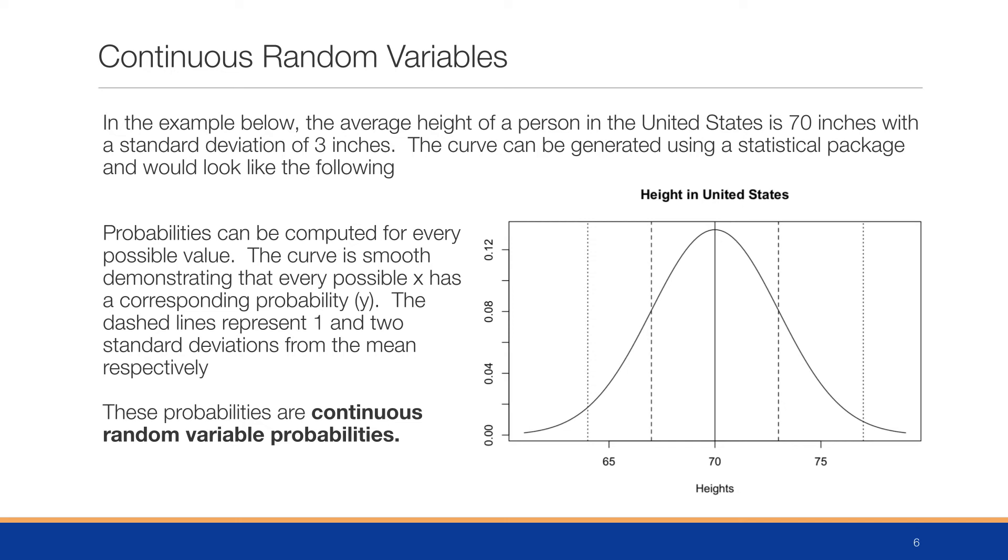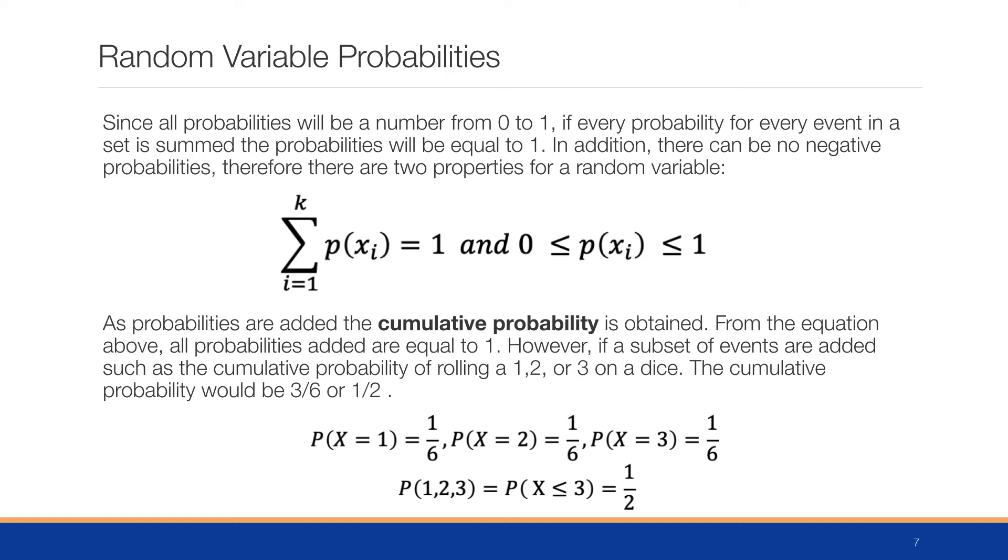All probabilities will be a number between zero and one, and if we add all of them together it will add up to one. This formula says we're going to take the sum of every event's probability and it will add up to one, and each one of those events has a probability between zero and one inclusive. As probabilities are added, we have this notion of cumulative probability.